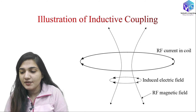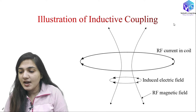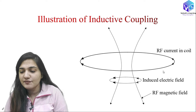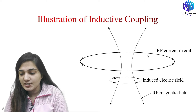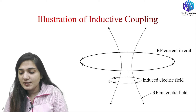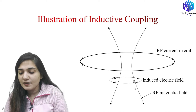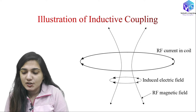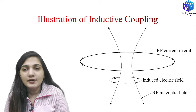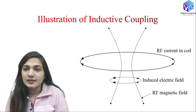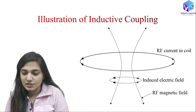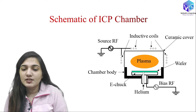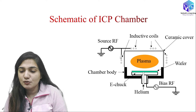You can see the inductive coupling in the schematic: RF current flows in a loop, and the changing current forms a changing electric field. Here you can see the induced electric field, the direction of the RF magnetic field, and how the electron movement occurs in the circular direction due to this inductive coupling.